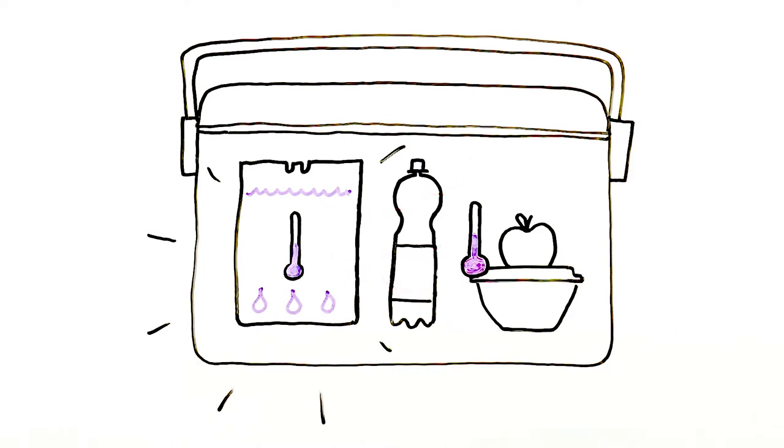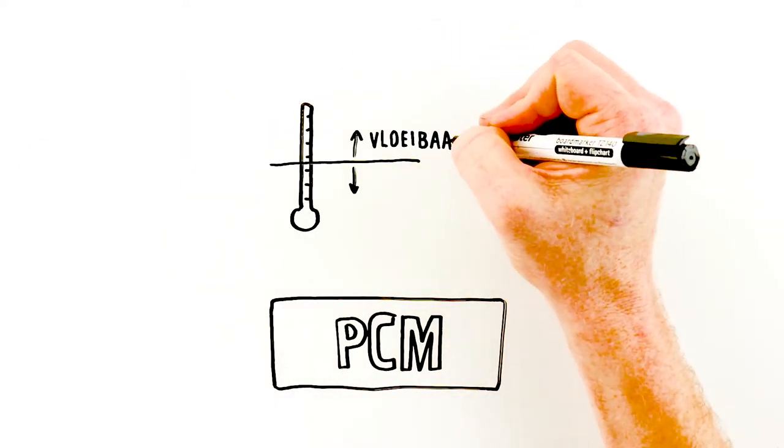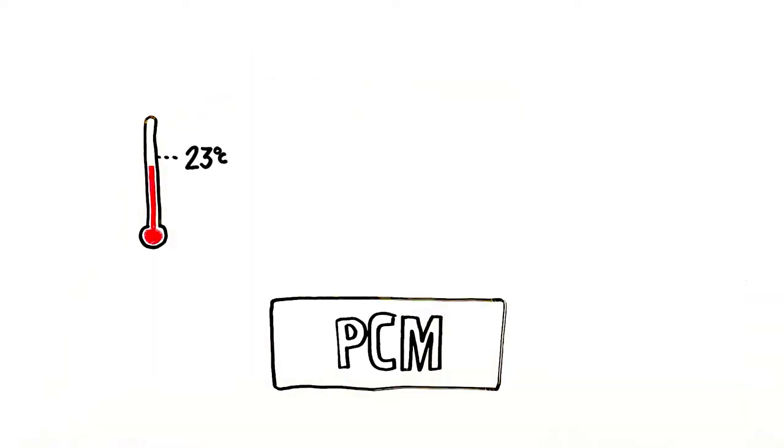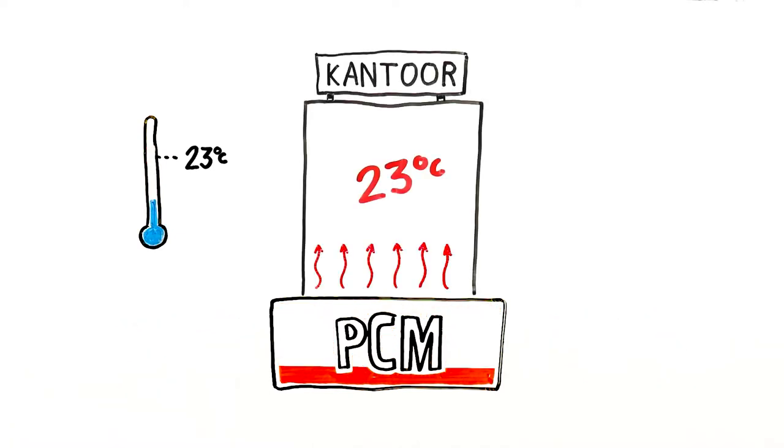Some PCMs are saltwater solutions that allow you to program the transition point from water to ice and back again. For example, you might want to reach a temperature of 23 degrees Celsius, which is ideal for a workplace. When it's warmer than that, the PCM stores energy. When the temperature is colder, it releases it.